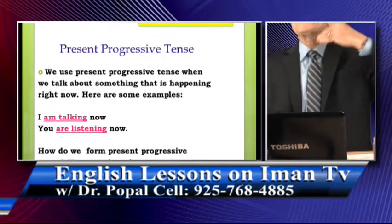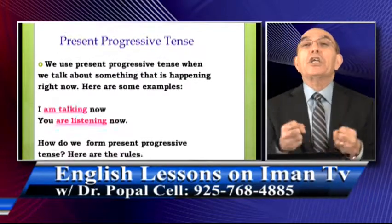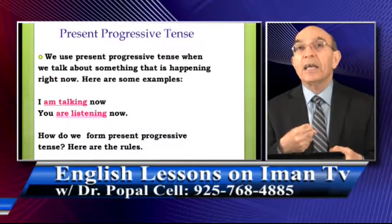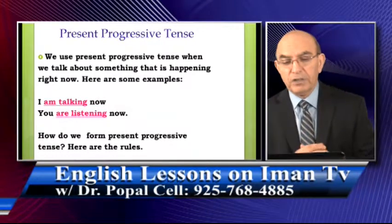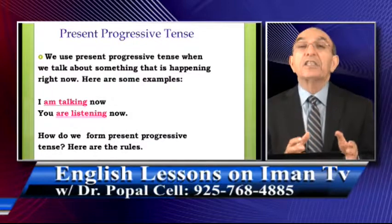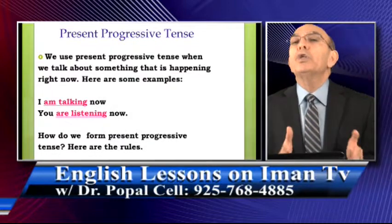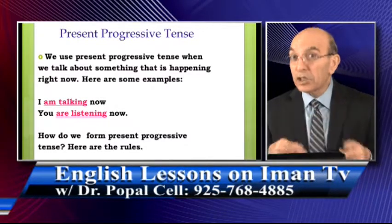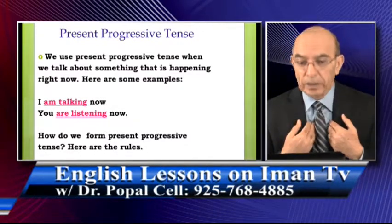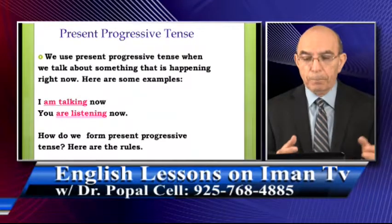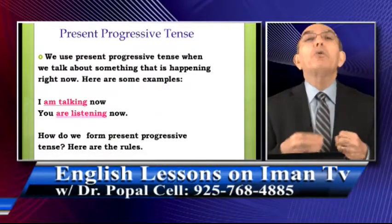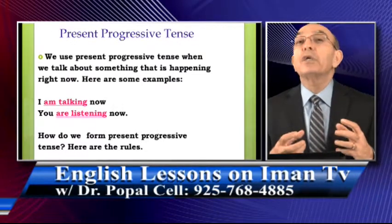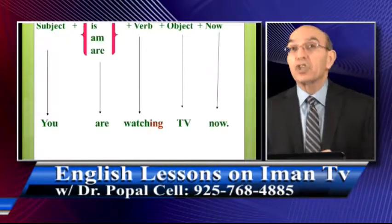Remember we studied the simple present tense, which we use to talk about something we do again and again. The present progressive tense, we use to talk about what we do right now, at this moment of speaking. For example, at this moment I am talking and you are listening. So how do we make this tense? What are the rules for this? I'm going to explain that in the next slide.